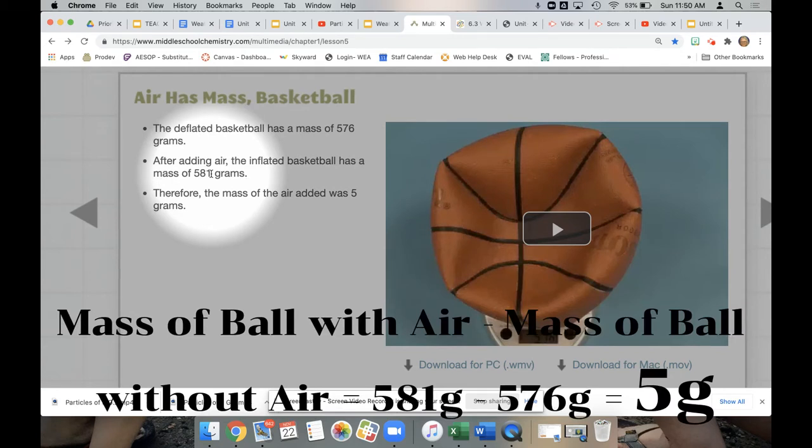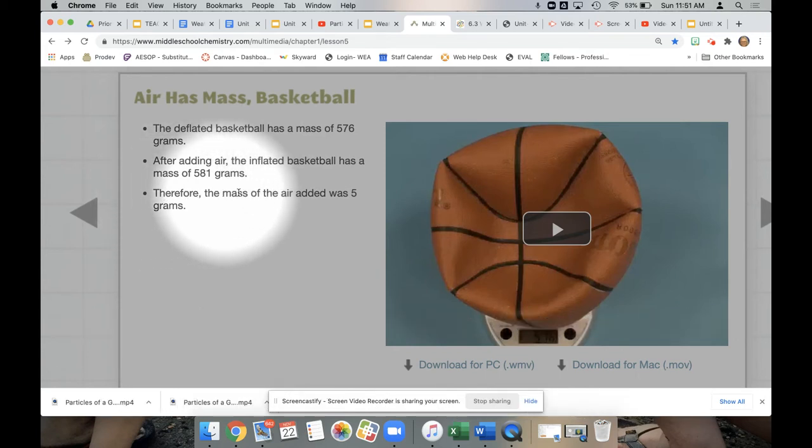That leads us to understand that the only way that the mass of the basketball could increase is if the air itself has mass. So we say, therefore, the mass of the air added was 5 grams.